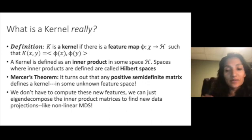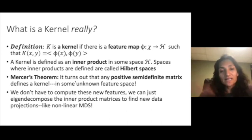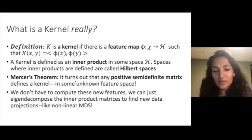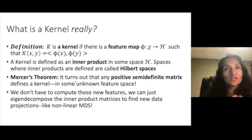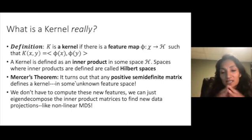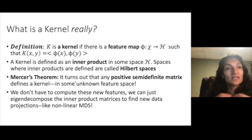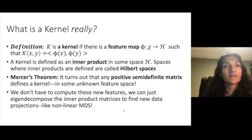There's a very important result called Mercer's Theorem that says any positive semi-definite matrix defines a kernel in some unknown feature space. And what's more, we don't even have to compute this new feature space. We can just eigen decompose this matrix, resting in the knowledge that it is actually an inner product matrix to find new projections of the data like we did for MDS. So this is like a non-linear version of MDS.